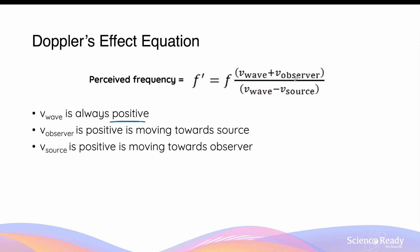The velocity of the observer could either be positive or negative. In this equation form, the velocity of the observer is positive if the observer is moving towards the source of the wave. Similarly, the velocity of the source can either be positive or negative — it is positive if the source is moving towards the observer. In simpler words, the velocity of the observer or the source will always be positive if they are moving towards each other, and negative if either is moving away from the other.